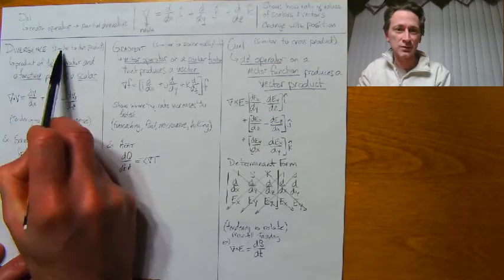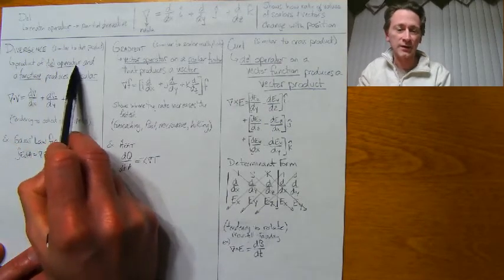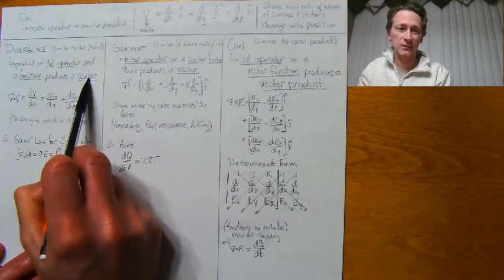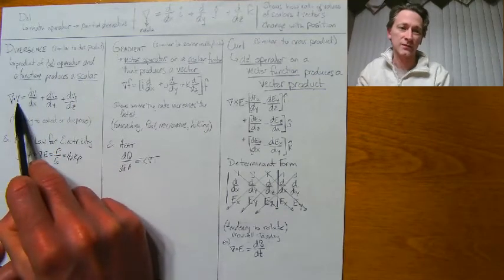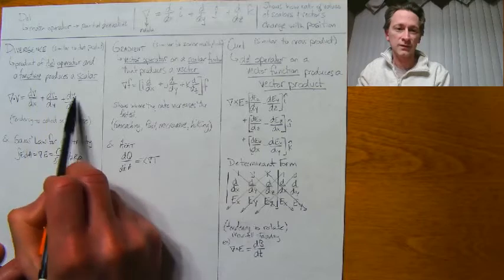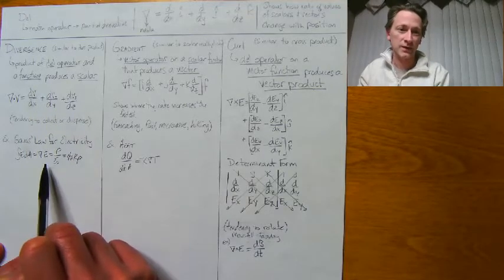The first is divergence. It's similar to a dot product, so you have the del operator and a function that produces a scalar value. This is del times the function v. You take the derivative in each direction, add them all up, and end up with a scalar value.